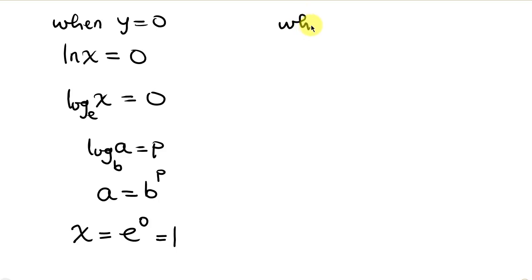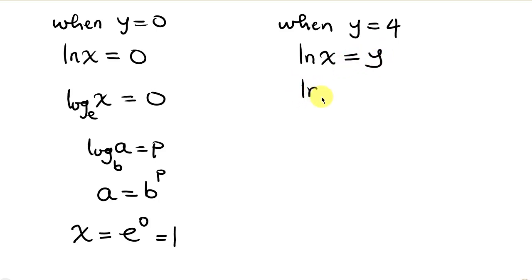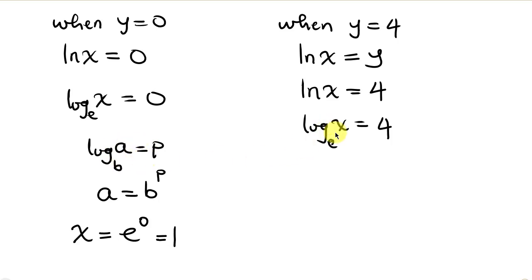Now for y equals 4: recalling that ln x equals y, we substitute to get ln x equals 4, i.e., the natural log of x equals 4. Applying the same logarithm property, x equals e raised to the power 4. So we have two values: x equals 1 and x equals e to the 4.